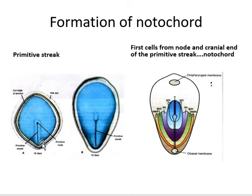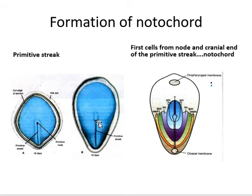This is the primitive streak. It has parts — at its cranial end it has a node and pit. As we want to study the formation of notochord, we need to know the cells from where they are coming for the formation of the notochord. These cells come from the primitive node and from the cranial part of the primitive streak, and they migrate between the ectoderm and endoderm in the median plane towards the oropharyngeal membrane.